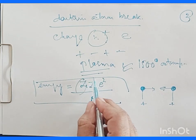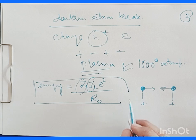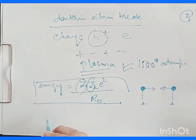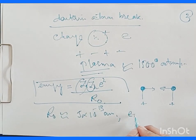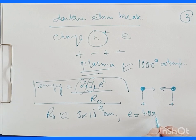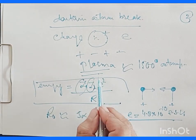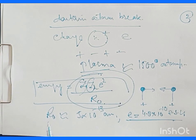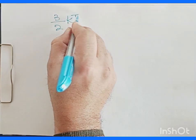Z₁ and Z₂ represent the net charge of each nucleus. r₀ can be taken as the order of the size of the nucleus, with a value of nearly 5×10⁻¹³ cm. The charge of the deuteron in electrostatic units is 4.8×10⁻¹⁰ esu. As a crude assumption, we can equate this Coulomb energy with the Maxwellian energy 3/2 kT.